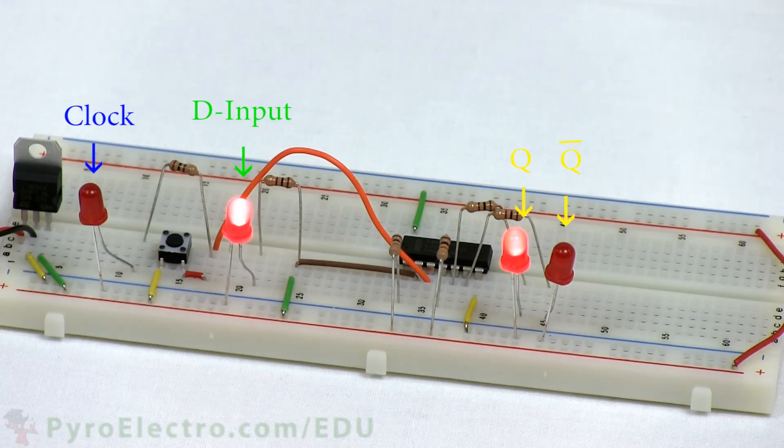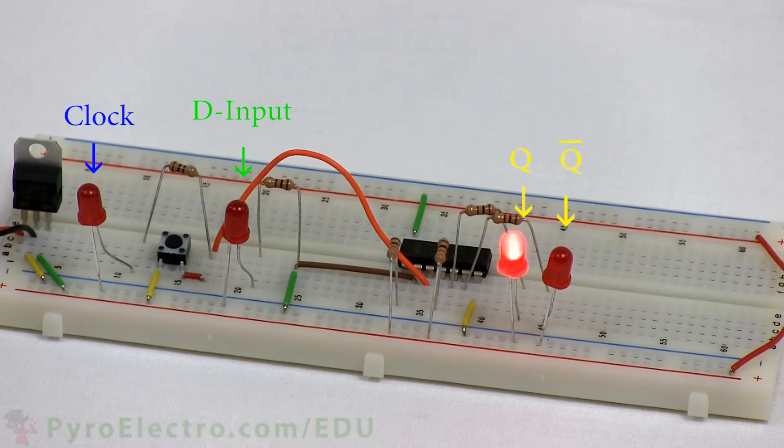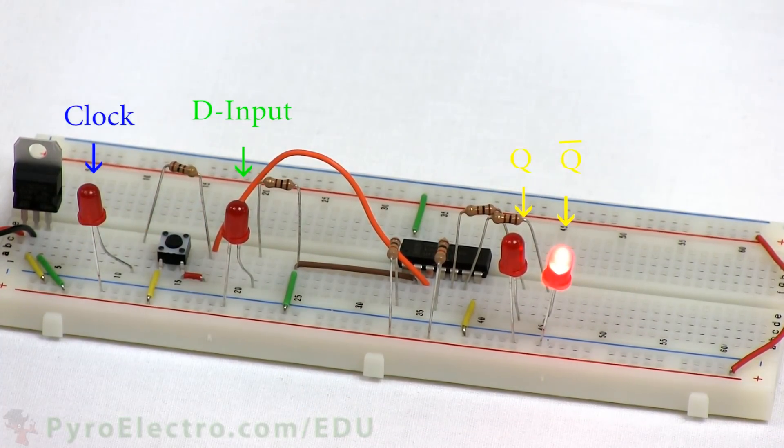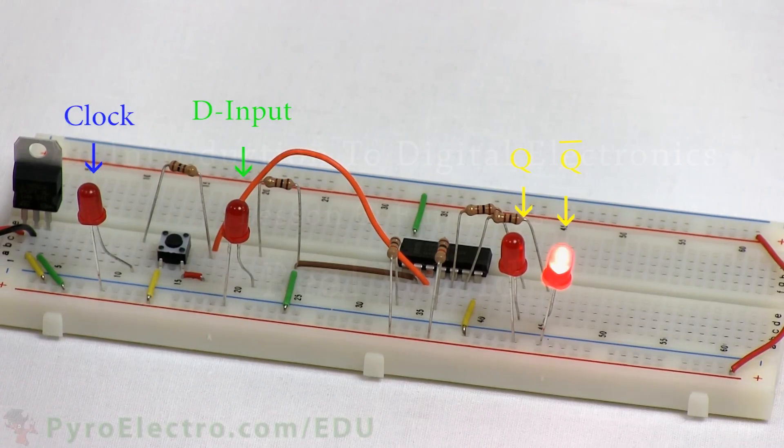We'll swap the input to be a logic 0, and when we press the clock signal again, the logic 0 is transferred to the output of the D flip-flop and held steady. You can do this back and forth forever, and the D flip-flop will always act the same.